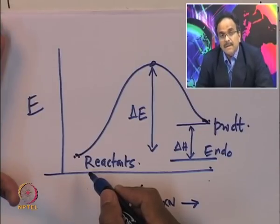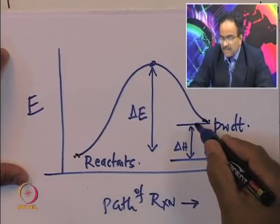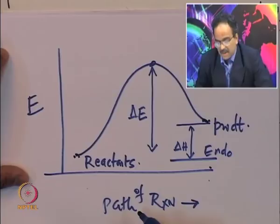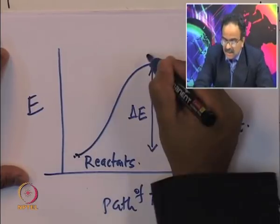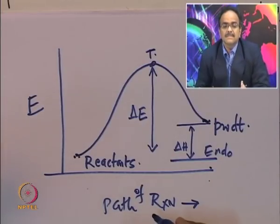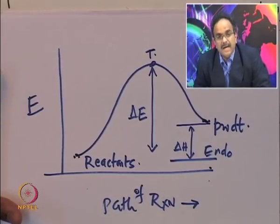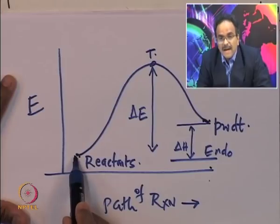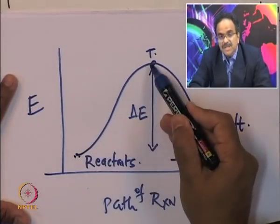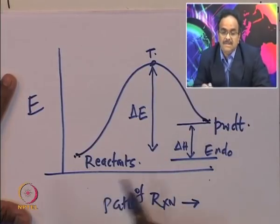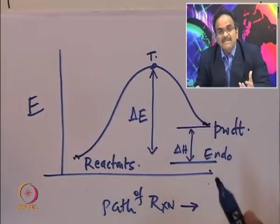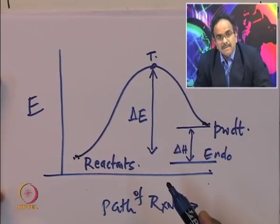If the product energy level goes further down compared to the reactants, then it is exothermic. This transition state is an intermediate form. Every reaction — whether catalytic or non-catalytic — has this energy diagram where you have a transition from reactants to product through an intermediate stage at a high energy level. I need to provide this much energy so that the reaction takes place. The molecules have this energy because of temperature.